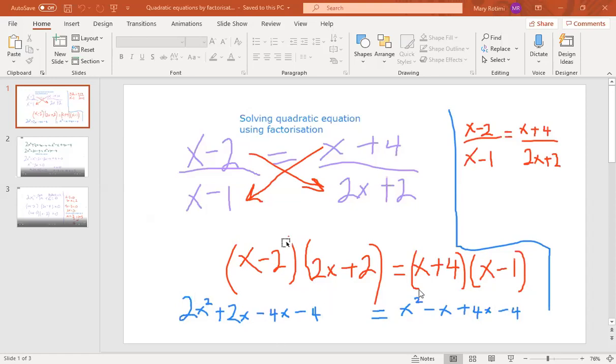So if you expand this bracket this is what you get. The same thing on the other side. x times x is x². x times -1 is -x or negative x. And then once you finish multiplying this bit here by these two terms, you need to multiply this one by these two terms as well. So +4 times x is +4x, and +4 times -1 is -4.